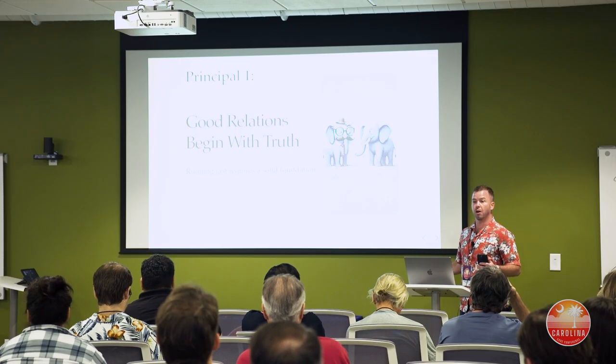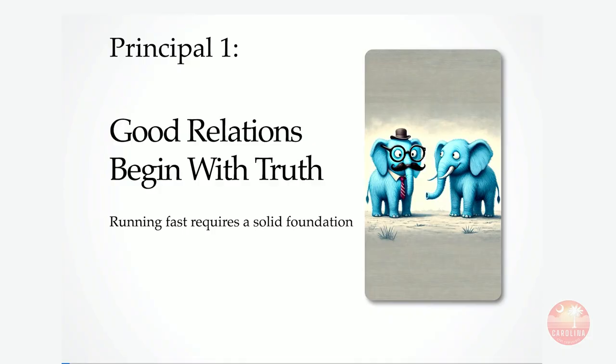Principle number one: good relations begin with truth. What I'm saying here is that if you want to scale, troubleshoot, and maintain your database fast, you can't be tripping over leaky, bad data abstractions. You really need your data model to be based on the physical, the logical, the business process that your application actually represents — not just technical abstractions done for convenience. It needs to be grounded in reality.